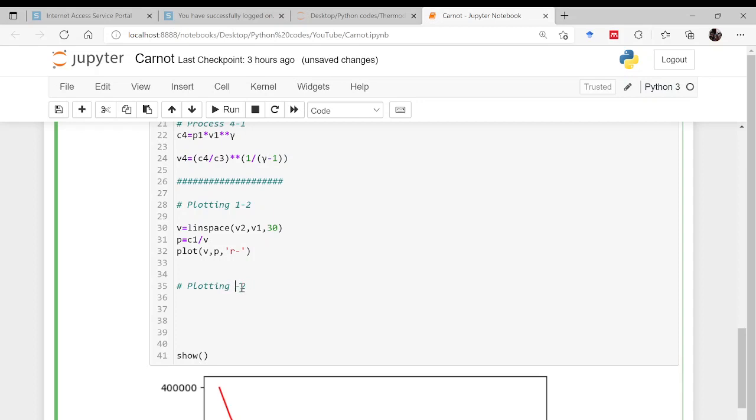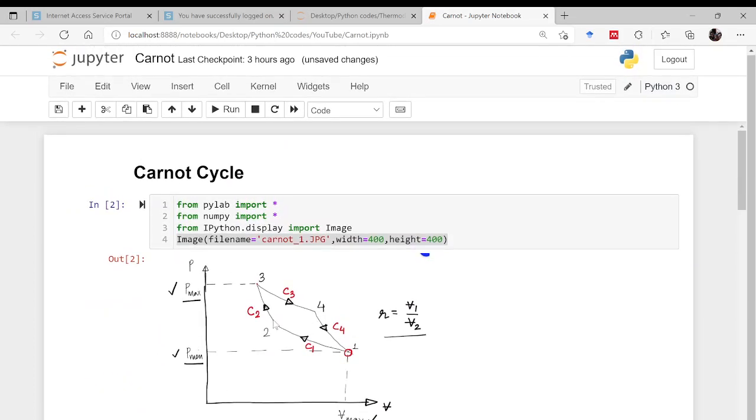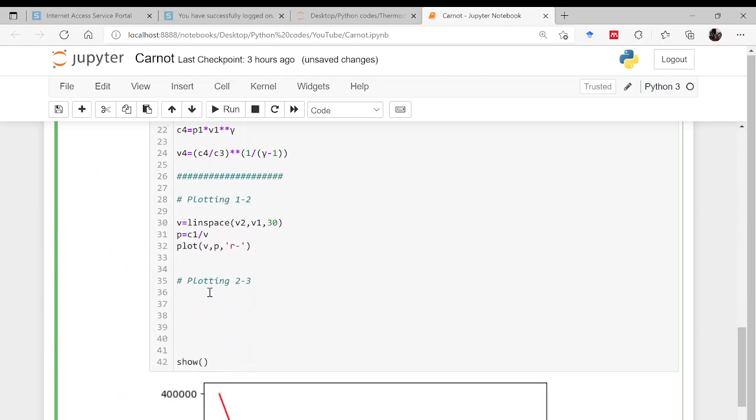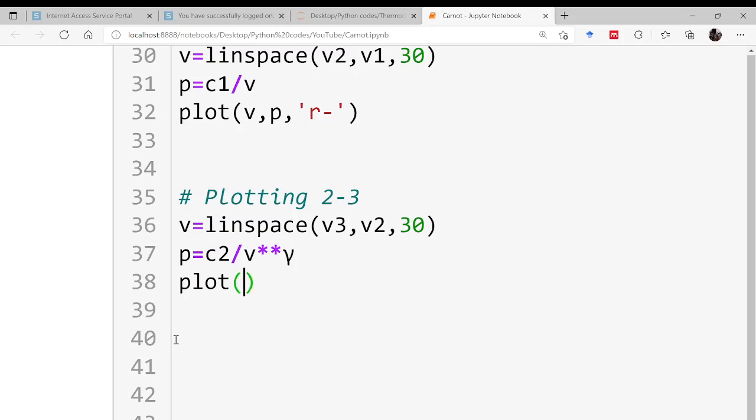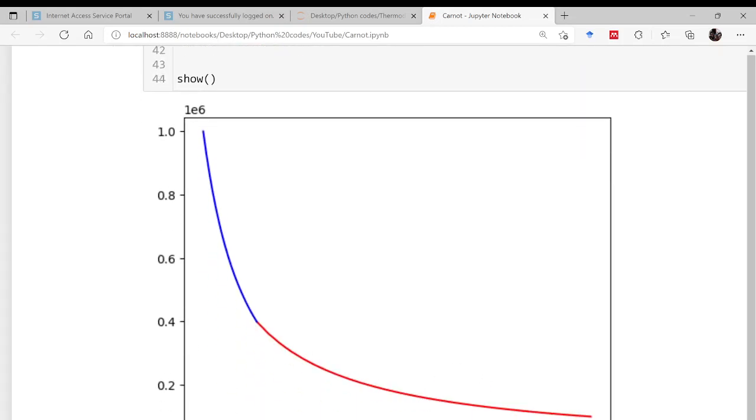Now in this process the volume is varying from minimum V3 to V2. I will be saying V is equal to linspace V3 comma V2, let us say 30 points are there. And then pressure is varying like C2 divided by V to the power gamma. And then simply say plot this V comma P and let us give this blue color. So now you can see you have the process 1 to 2 and you also have the process 2 to 3 with you.